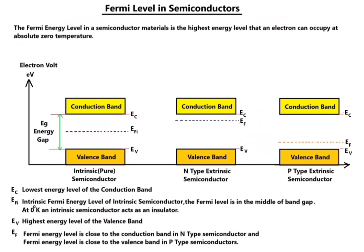EC represents the lowest energy level of the conduction band, and EFI represents the intrinsic Fermi energy level of intrinsic semiconductor. The Fermi level is in the middle of the band gap at zero degree Kelvin, and intrinsic semiconductor acts as an insulator.